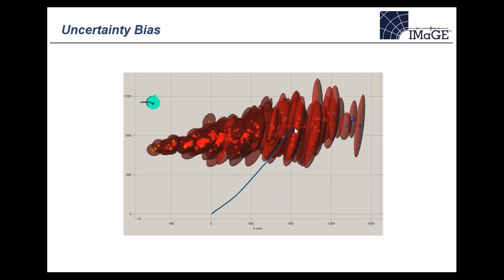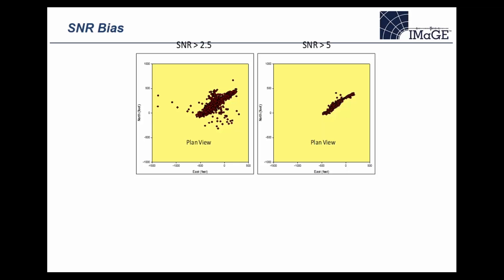A simple tip: when inferring fracture dimensions — whether height, length, or width — it's important to visualize the error ellipsoids, particularly the direction of maximum uncertainty, to understand how that would impact the geometry being measured.